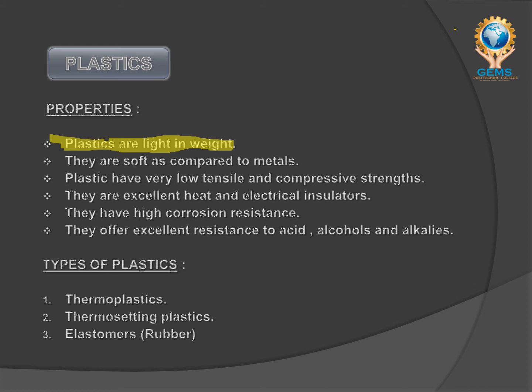Plastics are soft compared to metals — very soft when compared to metals. Plastics have very low tensile and compressive strength. Because they are lightweight and flexible, compressive strength is very low, so they cannot withstand greater impact. They are excellent heat and electrical insulators — heat cannot pass through them, and current also cannot pass over them.